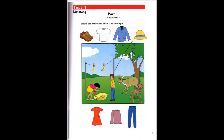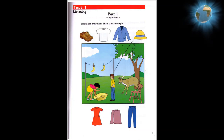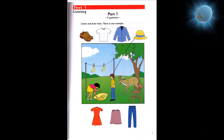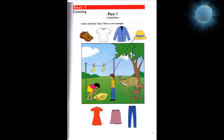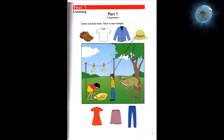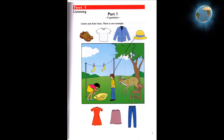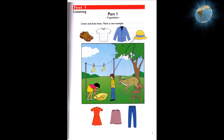Part one. Look at part one. Now look at the picture. Listen and look. There is one example. Put the hat on the boy's head. Put the hat on the boy's head. Can you see the line? This is an example.